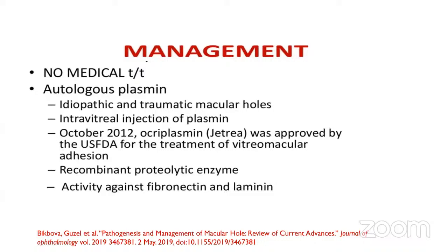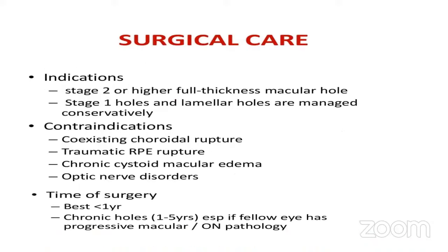What are the management options in macular hole? Most importantly, there is no medical treatment. Autologous plasmin was tried to induce PVD but did not have much success. For surgical management, indications are stage 2 or higher full thickness macular holes. Stage 1 holes and lamellar holes are managed conservatively. Contraindications are coexisting choroidal rupture, traumatic RPE rupture, chronic cystoid macular edema, and optic nerve disorders. The best time for surgery is within 1 year; chronic holes of 1 to 5 years with progressive macular or optic nerve pathology can also be attempted.